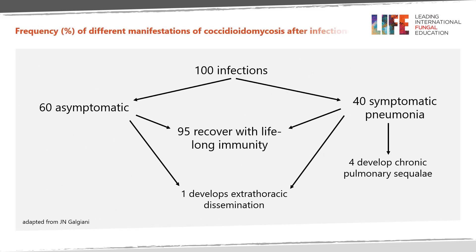This slide demonstrates the frequency of the various manifestations of coccidioidomycosis: 60% asymptomatic, 40% symptomatic pneumonia. 95% will recover with lifelong immunity. Approximately 4% may develop chronic pulmonary sequelae, and 1 out of 100 may develop extrathoracic dissemination.